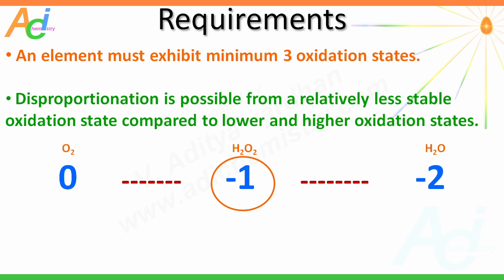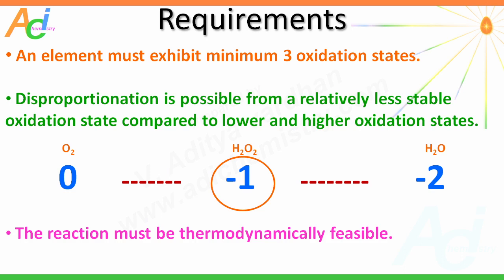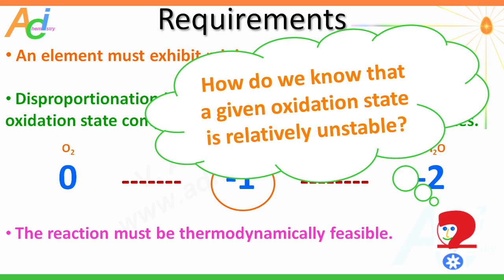One should also keep in mind that a disproportionation reaction must be thermodynamically feasible. The question is: how do we know that a given oxidation state is relatively less stable and the disproportionation reaction is thermodynamically feasible? This can be determined by using Latimer diagrams.